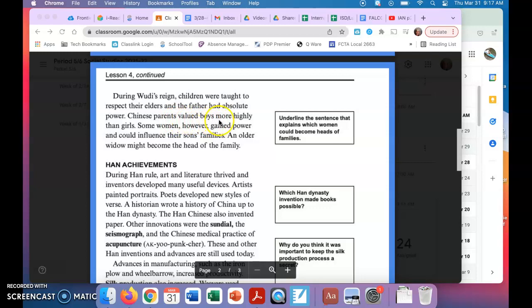Chinese parents valued boys more highly than girls. Some women, however, gained power and could influence their sons' families. An older widow might become the head of the family. Again, what sentence explains how women could become heads of families?